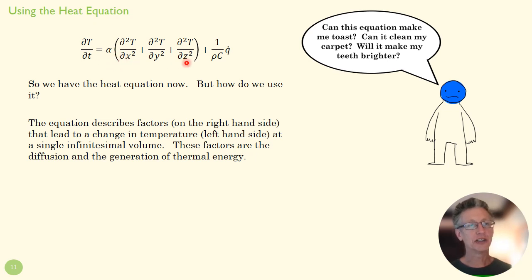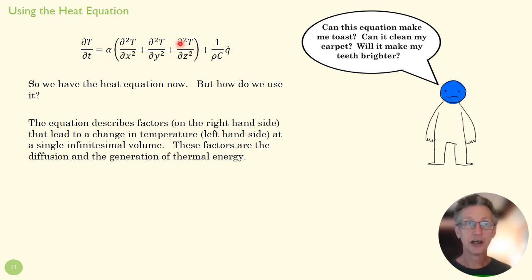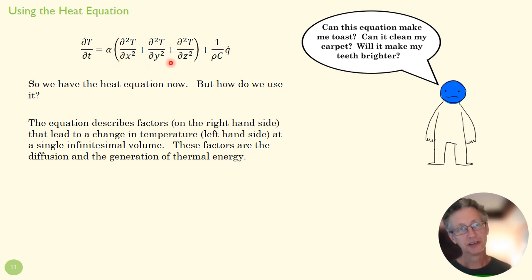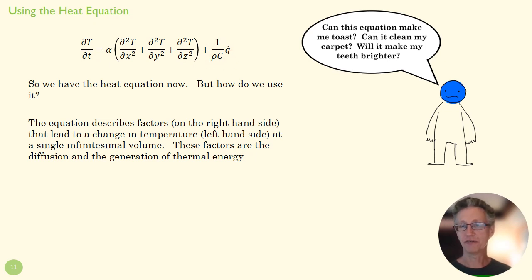These factors here: this is the diffusion of thermal energy — the flux that moves through it because of temperature differences. This is the generation of thermal energy within that volume itself. So this says temperature will go up if the flux coming in is bigger than the flux going out, or if there's a lot of generated heat in this volume.